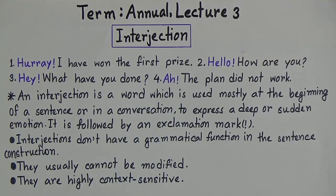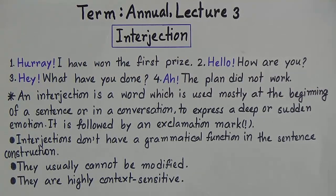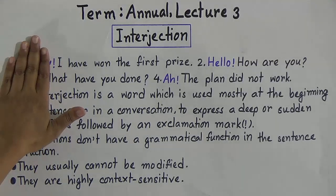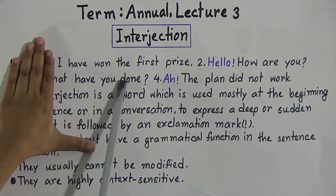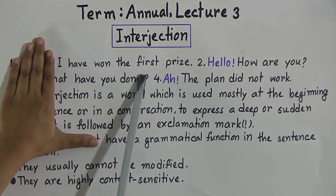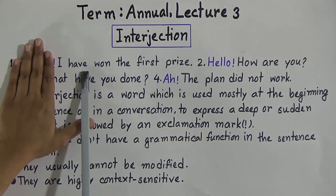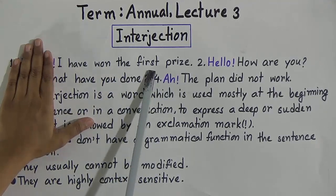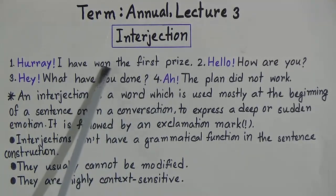Interjections have some interesting features. First, interjections don't have a grammatical function in sentence construction. Now look — if I hide the word hooray, we will find: I have won the first prize. This expresses a complete sense. That means if we hide or omit hooray, it will not affect the sentence and will not change its structure.